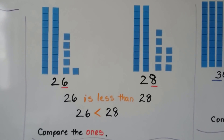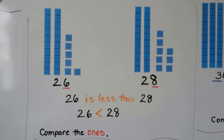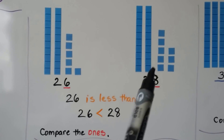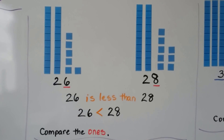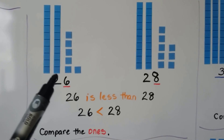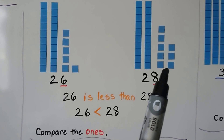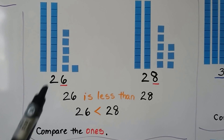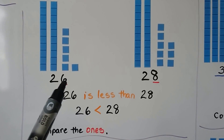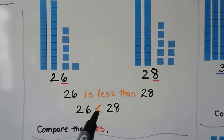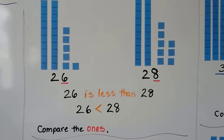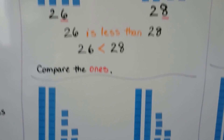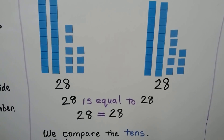26 is less than 28. We have two tens and we have two tens, so we compare the ones. This has six ones, this has eight ones. Six ones is less than eight ones, so 26 is less than 28.